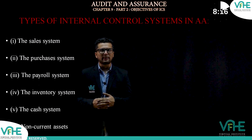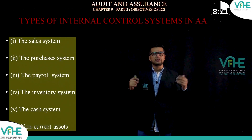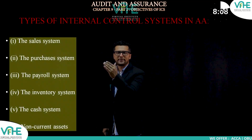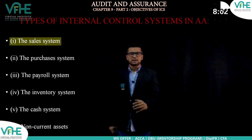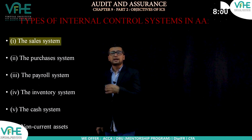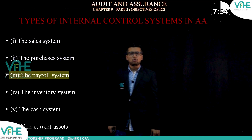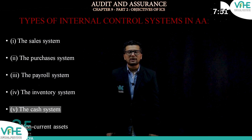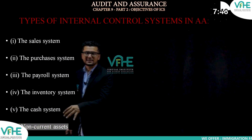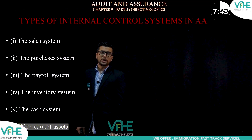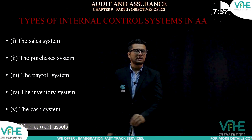In the AA syllabus, there are overall six internal control systems. Starting from the most important: the sales system. If you understand the sales system, you are automatically good at the purchase system, which is entirely the opposite. Then we have the payroll system, inventory system, bank and cash system, and the non-current asset system.